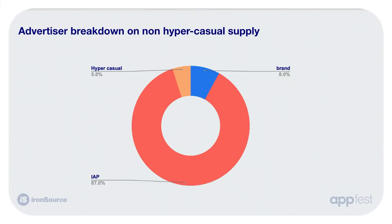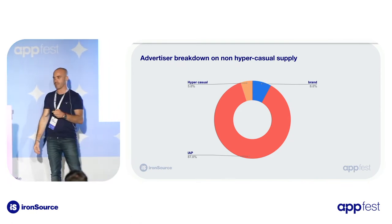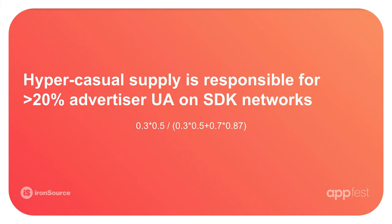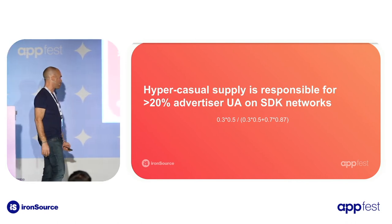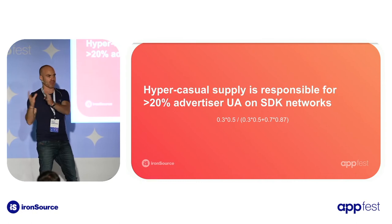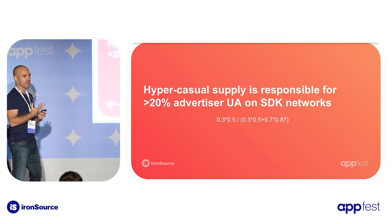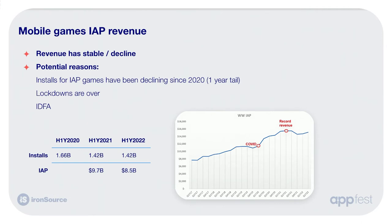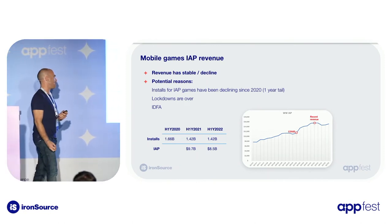If you look at impressions not generated by hypercasual games, IAP takes 87% of the demand for non-hypercasual supply. If you put it into a formula, in general about 20% of the installs that IAP advertisers get from SDK networks come from hypercasual supply — which is incremental, because it's social plus a bit of non-hypercasual games plus this — and it generates a significant impact on IAP-based advertisers' ability to grow their audience and find more users at the right time. The fact that hypercasual grew helped non-hypercasual grow their installs significantly, and once it stopped growing, there is less supply for them to find users.